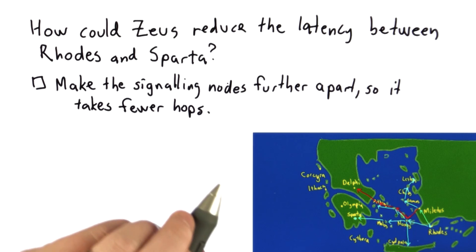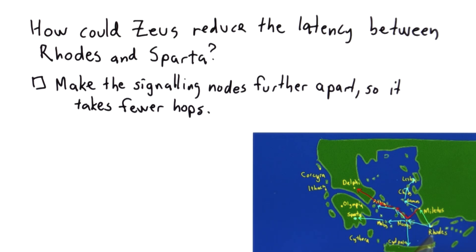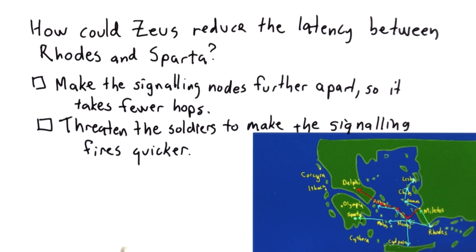He could make the signaling nodes further apart. So instead of going from Rhodes to Naxos to Milios to Sparta, maybe it would only have to go one hop — there would be a new island in the middle, and it could go from Rhodes to the new island and then to Sparta. Or he could threaten the soldiers at all the signaling points and scare them into working harder, so they start the fires more quickly when they need to send a message.